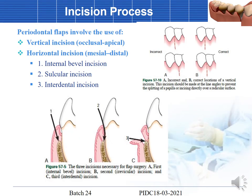There are two types of incision. The vertical incision is given at the line angles between the teeth, not splitting the papilla. The horizontal incision has three types: the internal bevel incision, the crevicular incision, and the interdental incision.